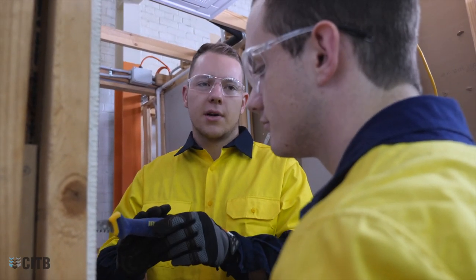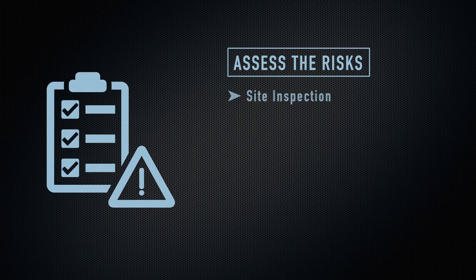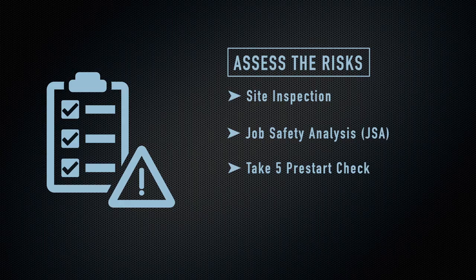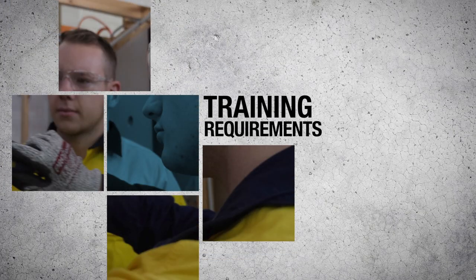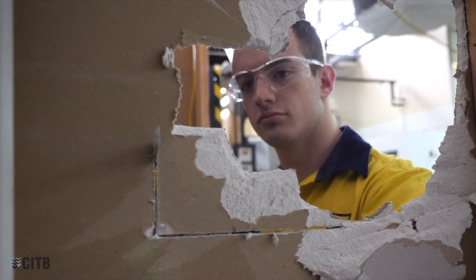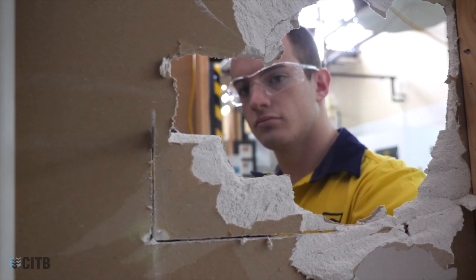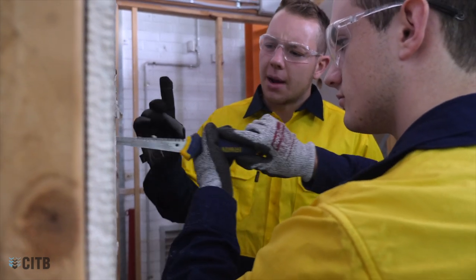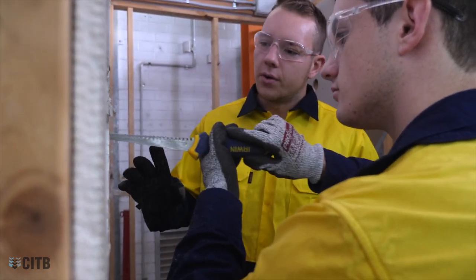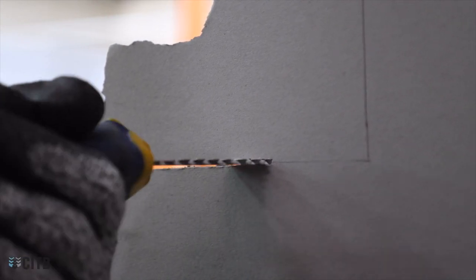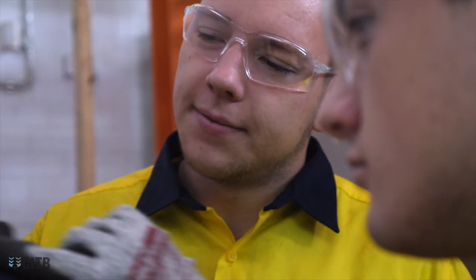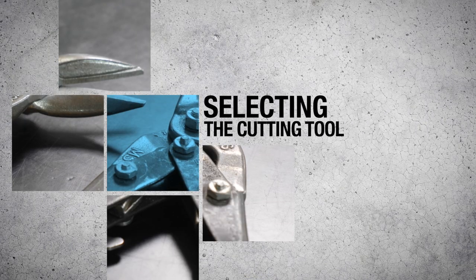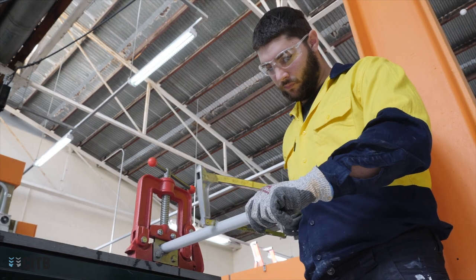Due to these potential hazards, a thorough risk assessment of the environment and the task needs to take place before commencing work. This may include a site inspection, job safety analysis (JSA), or a take 5 pre-start check. Any person using a tool must have been instructed by a competent person and deemed to be competent in accordance with the safe operating procedure prior to commencing the task.